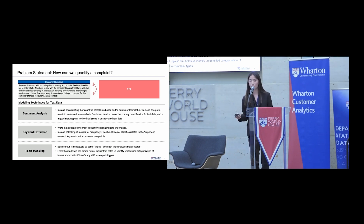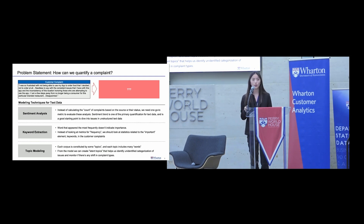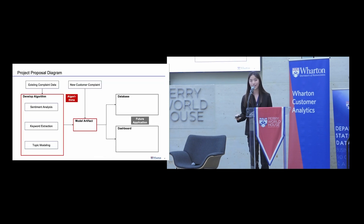We settled on three major modeling techniques. First, sentiment analysis — looking at whether a complaint is positive or negative and by how much. Next, keyword extraction, which extracts keywords and their respective relevancy scores to summarize the complaint in just a few words. Finally, topic modeling, which scans the entire dataset to find major topics and assigns every complaint a probability of falling under each topic.